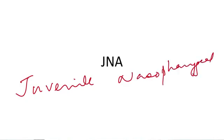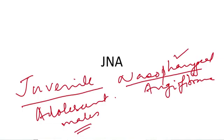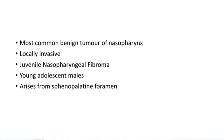The next topic is juvenile nasopharyngeal angiofibroma, JNA. The name is self-explanatory: 'juvenile' because it occurs in adolescent males; 'nasopharyngeal' because it is seen in the nasopharyngeal area; and 'angiofibroma' because it has blood vessels and fibrous tissue. It is a very important topic and forms a lot of MCQ questions. It is the most common benign tumor of the nasopharynx, but though benign, it is locally invasive, and it is seen in young adolescent males.